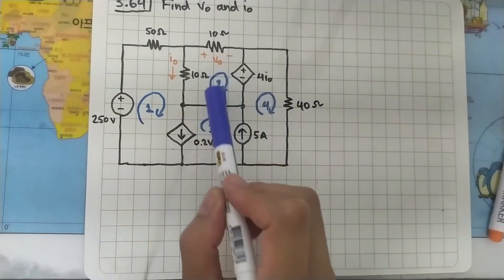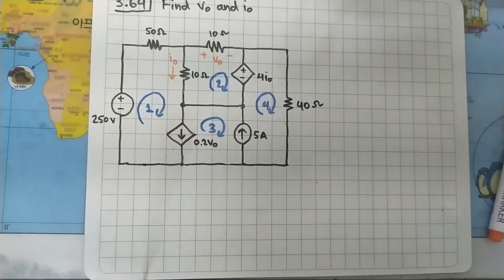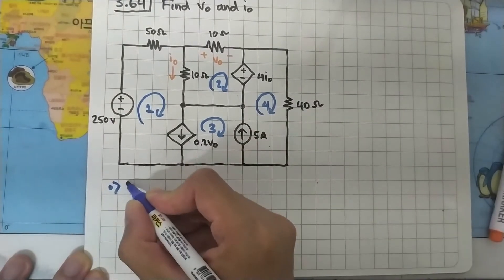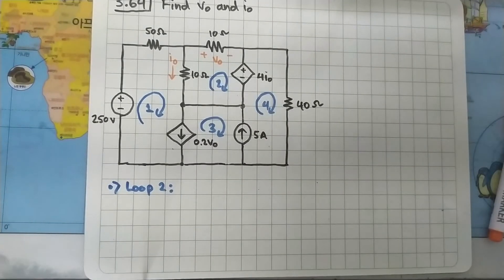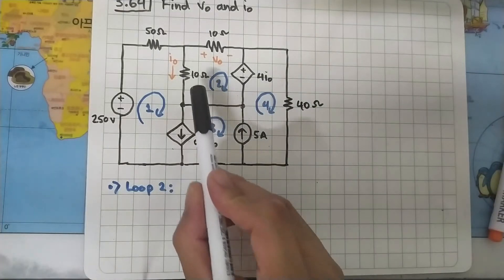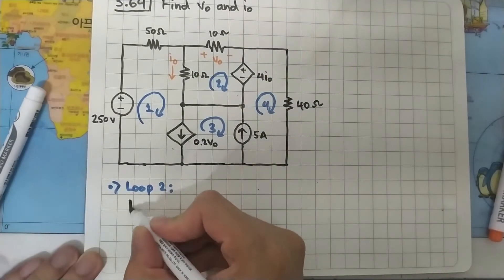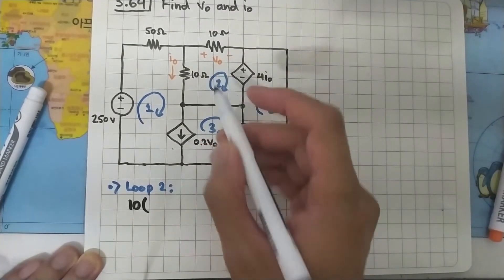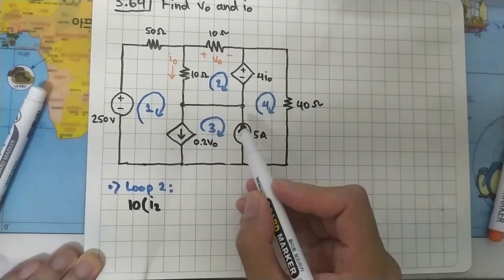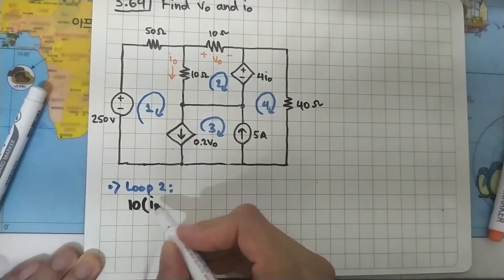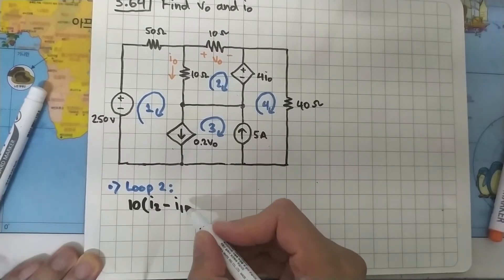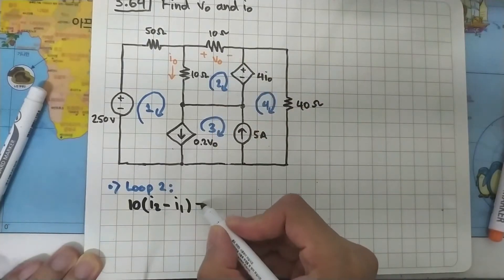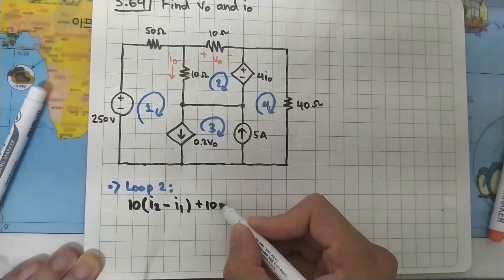The only normal analysis we can do on these loops is loop number 2, so we start there. We begin from this 10-ohm resistor. Our focus is on loop 2, so I2 is the main multiplier, but here I1 is flowing in the opposite direction, giving minus I1. Then we move on to this 10-ohm resistance and the only current passing through it is I2.